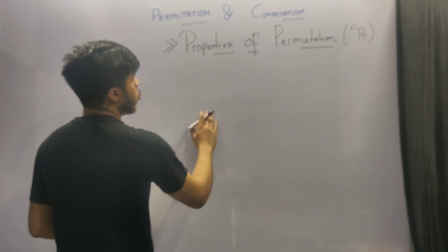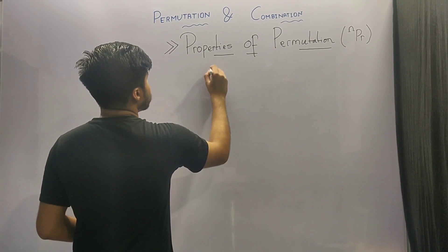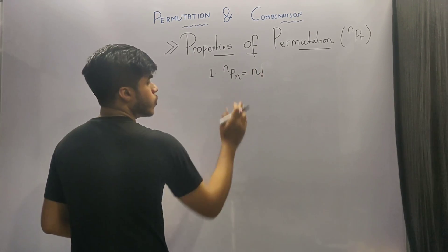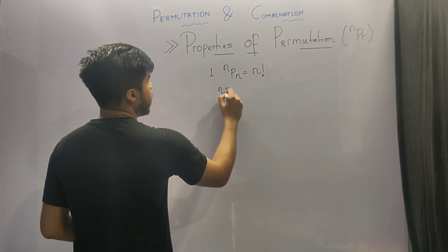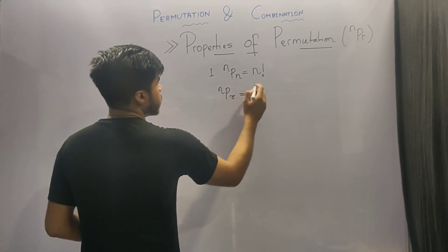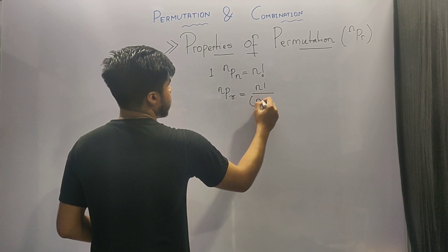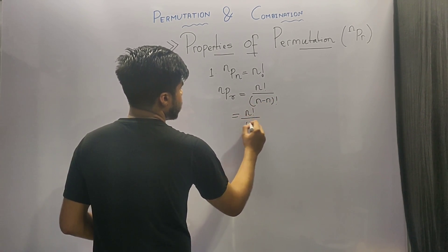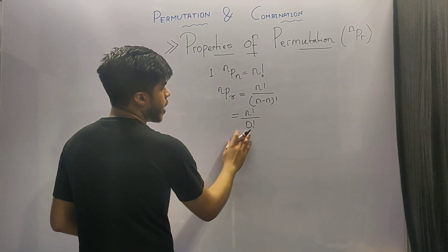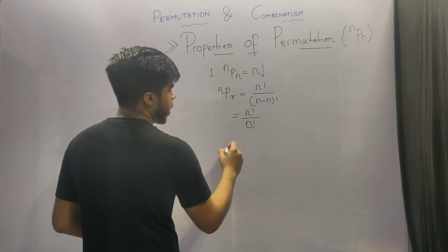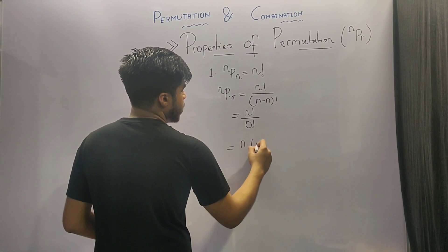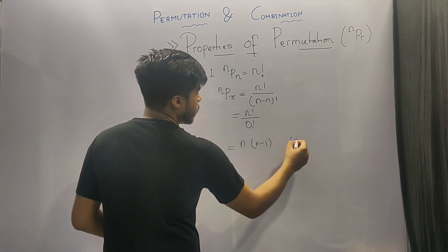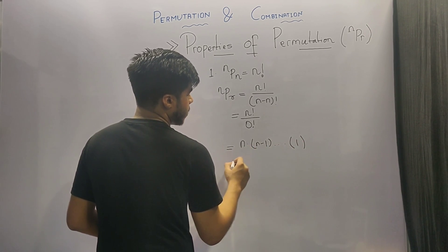With the basic revision, let's begin with the properties of permutation. The first property is that nPn is equivalent to n factorial. You can check this by putting it in the formula of nPr: n factorial divided by n minus n factorial, which is n factorial upon 0 factorial. Using the property that n factorial by r factorial equals n into n minus 1 up to r plus 1, with r equal to 0 we move up to 1, which is nothing but n factorial.